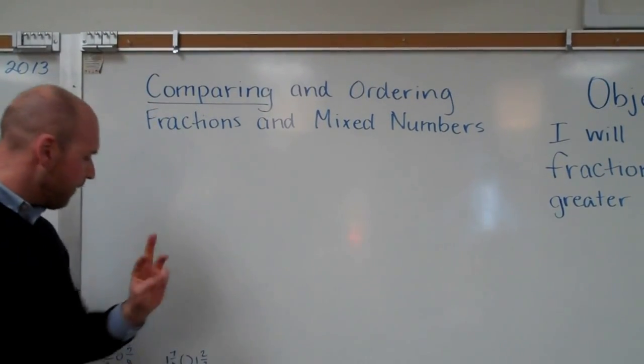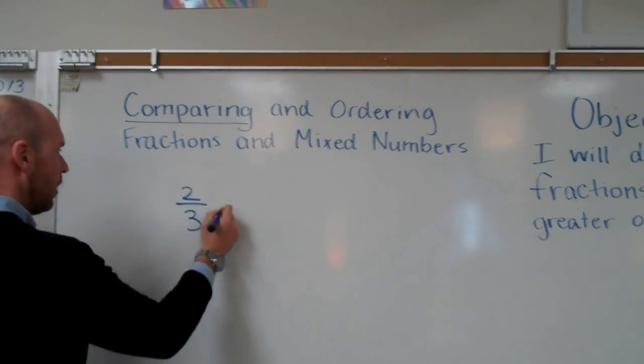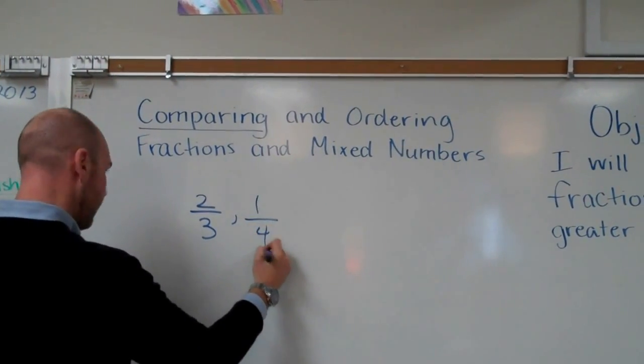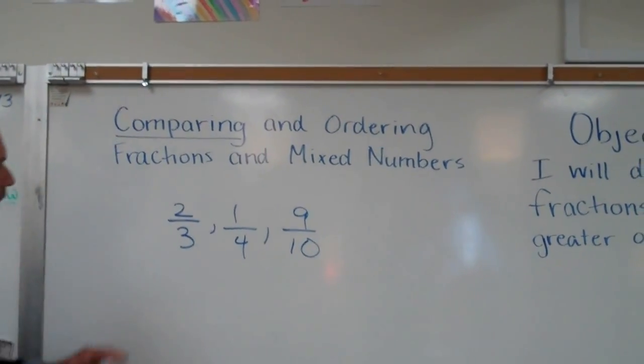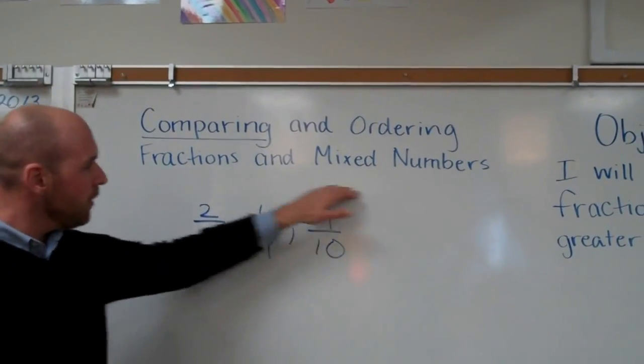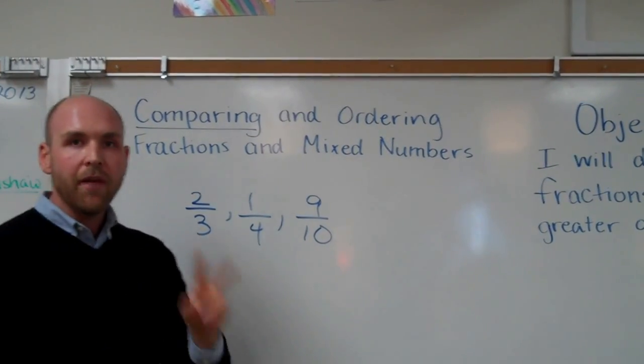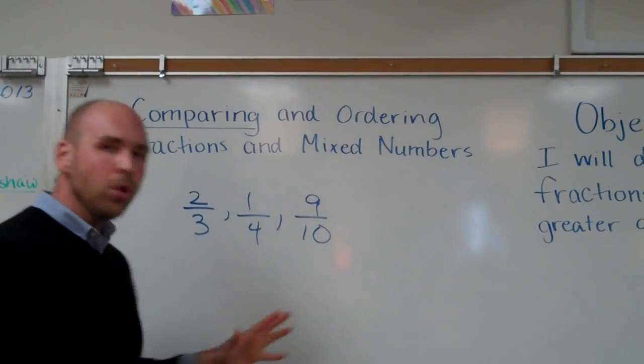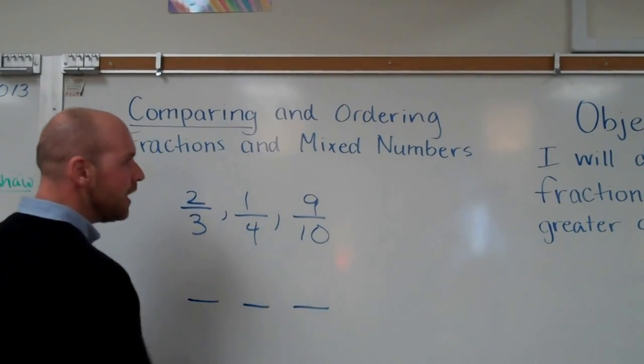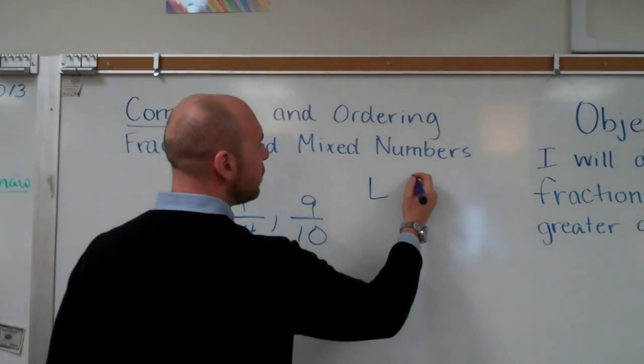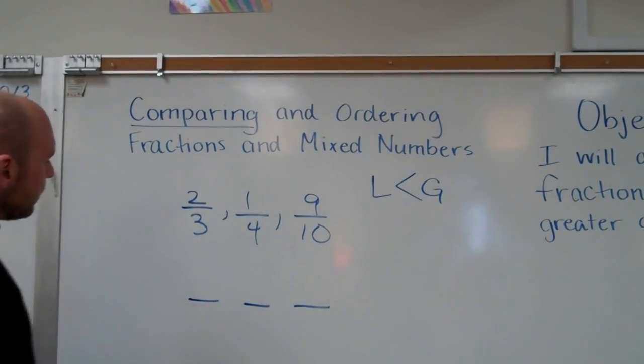Now let's look at three very simple fractions. Two-thirds, one-fourth, and nine-tenths. All three of these fractions, we can't use any of these denominators. We have to find out a whole new denominator for these before we can place them. So let's say we're going to do them least to greatest.